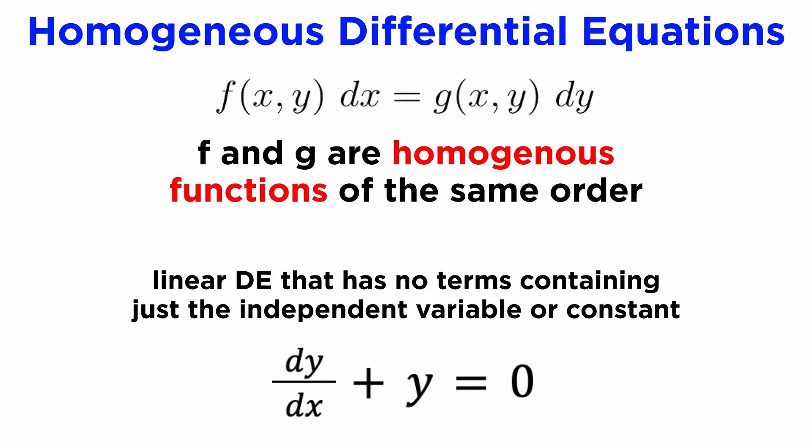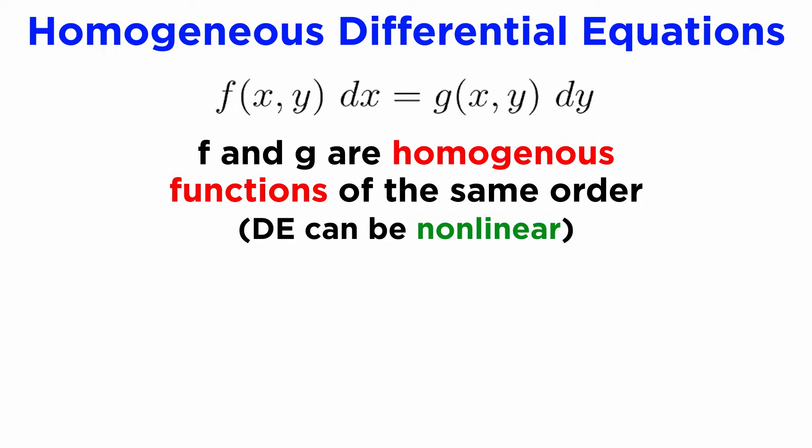We encountered this word homogeneous before in the first tutorial on differential equations, where it meant any linear DE without terms with only the independent variable or constants. So is there any connection? It turns out that non-linear DEs can be homogeneous too. They just don't fit the same nice pattern as the linear ones, so now we need to use this broader definition.